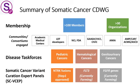The curation activities within the somatic CDWG take place within three disease task forces focused on pediatric cancer, hematologic cancers, and genitourinary cancers. The gene curation activities within each of these task forces ultimately results in the formation of somatic cancer variant curation expert panels, which follow a four-step approval process developed by ClinGen. Currently, the N-Track fusions expert panel has obtained step one approval from ClinGen. Other somatic expert panels newly forming are focused on curation of somatic variants in the FLT3 gene in hematological cancers and FGFR family of genes in genitourinary cancers.